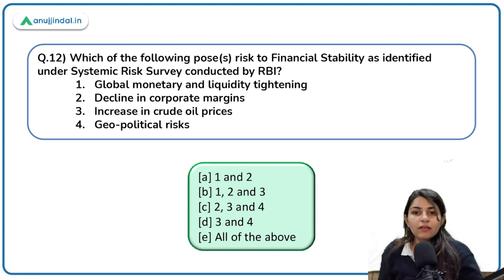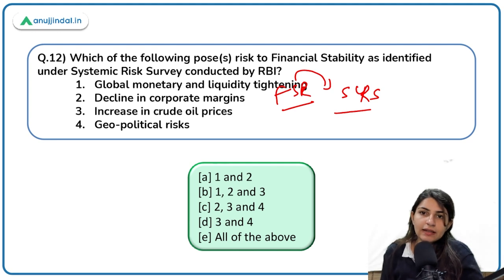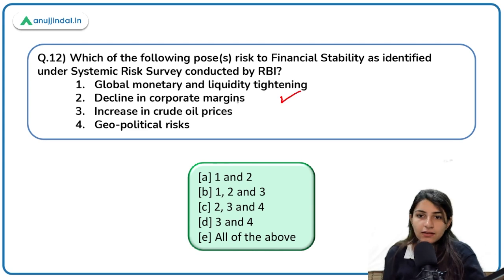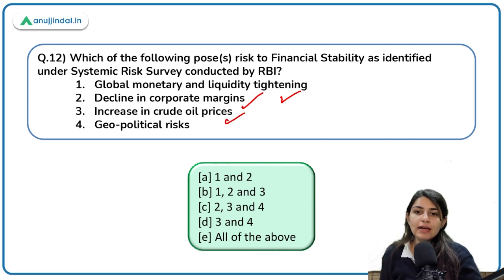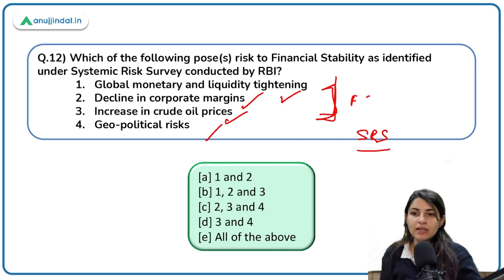According to the FSR's systemic risk survey conducted by RBI, the following are risks posed to financial stability: global monetary and liquidity tightening — correct; decline in corporate margins — correct; increase in crude prices — correct; and geopolitical risks — correct. All four were identified as risks in the systemic risk survey under the financial stability report conducted by RBI.